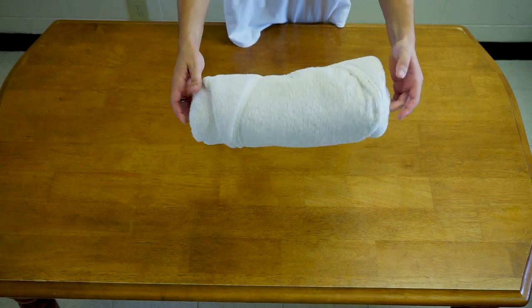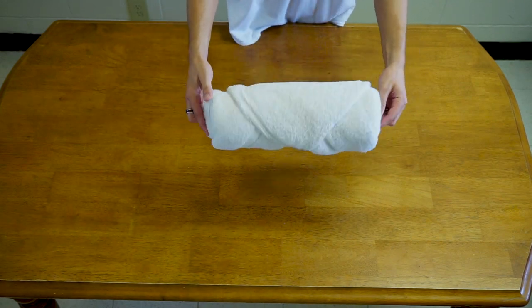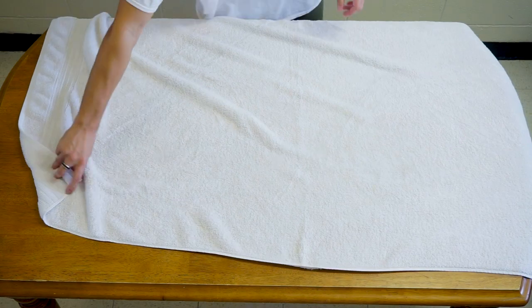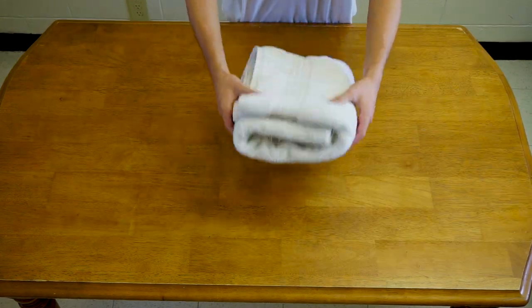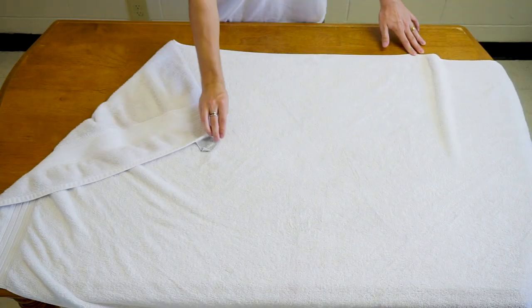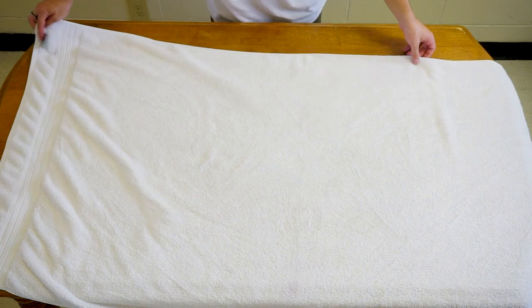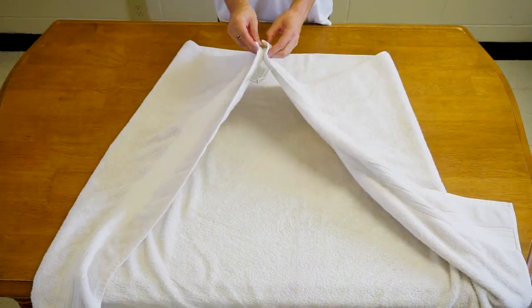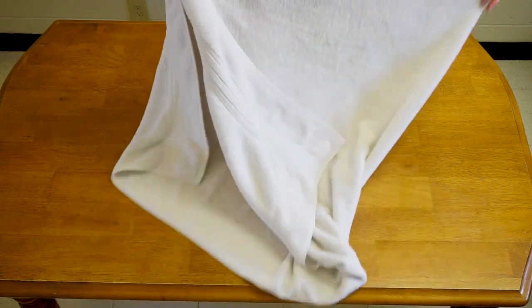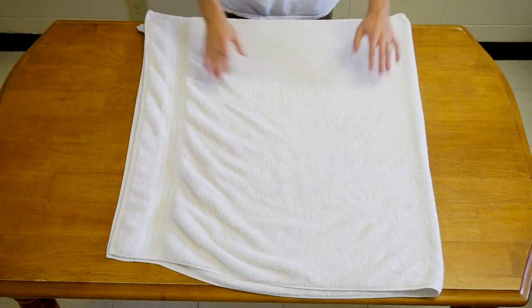Next up, this is a square fold. Again, lay your towel out so that the tag is facing up. Pull your corners together, tuck your tag underneath, lay it flat, get rid of your wrinkles, and smooth it out.